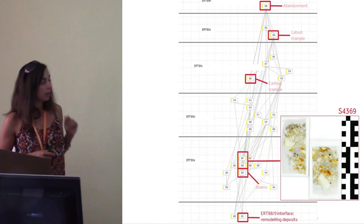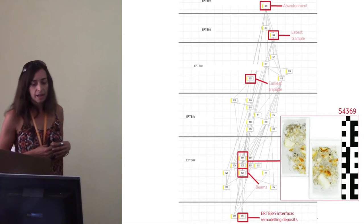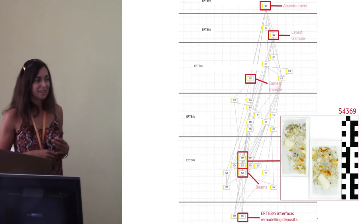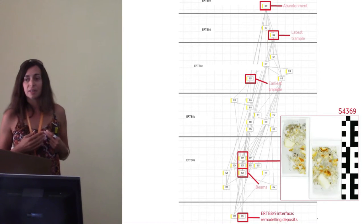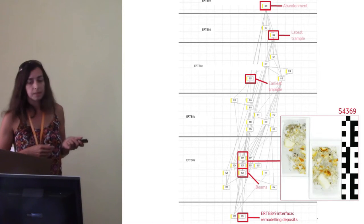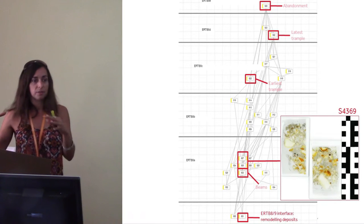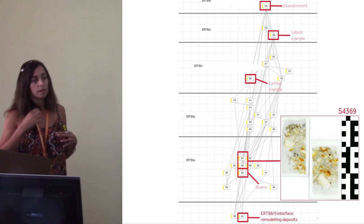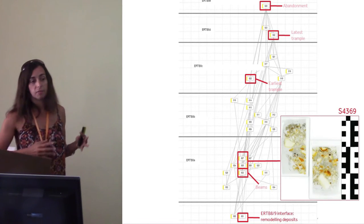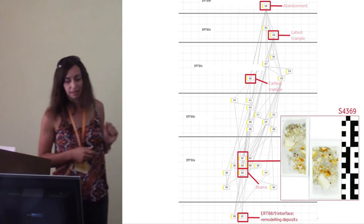Moving on to the earlier phases of the building — this is what I'm starting to look at now — we seem to have a glass-blowing workshop earlier on, continuing the industrial use of the building. We found a deposit of glass on top of which someone had dumped a load of very silica-rich sand and highly fired sediment as well. So that is what we're investigating next.